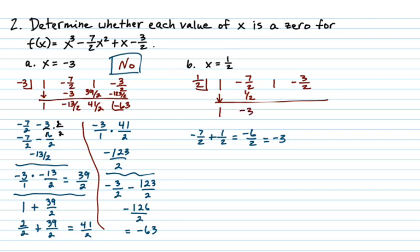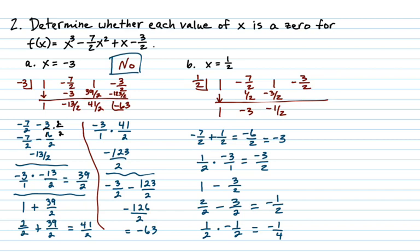Now negative 3 times 1 half will be 1 half times negative 3 over 1, which is negative 3 halves. Now we've got to add that to 1. 1 is 2 over 2. So now we have a common denominator, and we get negative 1 half. So next we multiply, we're going to get negative 1 fourth. And finally, again, you can see we're not going to get 0 here. But if you do the work here, you do find that you get negative 7 fourths. And again, since we didn't get a remainder of 0, the answer is no.